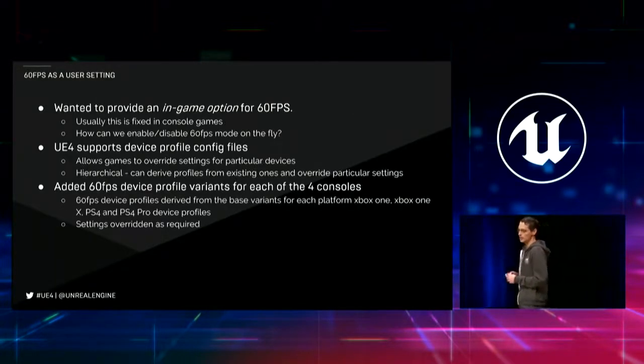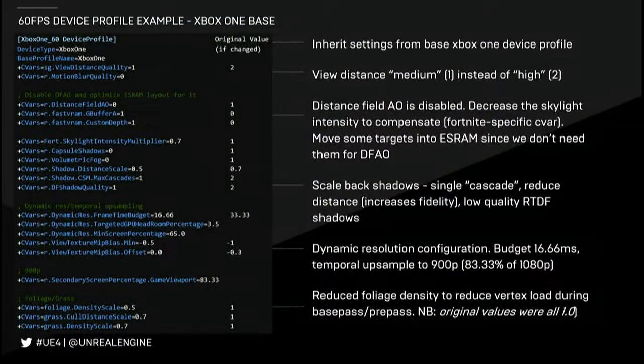We actually went with an in-game option for 60 FPS, which is maybe a little unusual. We wanted to give people the option to pick between visual fidelity or preferring frame rate. This added a bit of extra headache in terms of additional QA and testing, but it's kind of nice to have both. The way we did this is we leveraged device profiles in UE4. Device profiles allow you to specify different scalability options based on the platform — we made a device profile for 60 frames per second mode. For instance, the base Xbox: we tweaked a couple of settings where we had to deviate from the base Xbox settings, pulling in view distance a little bit, disabling distance field ambient occlusion, and scaling back shadow quality a little bit.